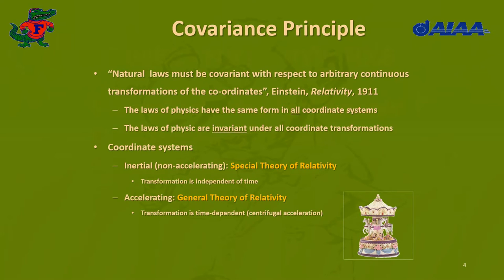What kind of coordinate systems do we have? There are two types. One are the inertial coordinate systems, the so-called non-accelerating coordinate systems, on which the special theory of relativity is based. If you have two inertial coordinate systems, the transformation elements between them are independent of time. The other category are the accelerating coordinate systems, on which the general theory of relativity is based. Here, the transformation matrix elements are time-dependent. One could say there is a centrifugal acceleration between these coordinate systems. Einstein's favorite example of these accelerated coordinate systems is the merry-go-round.